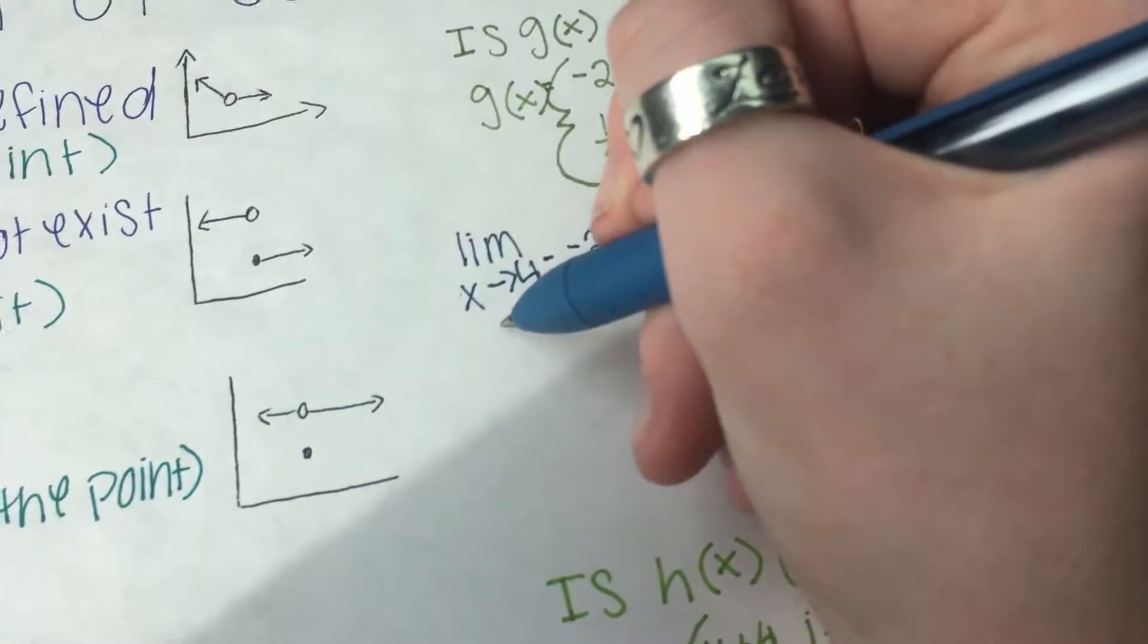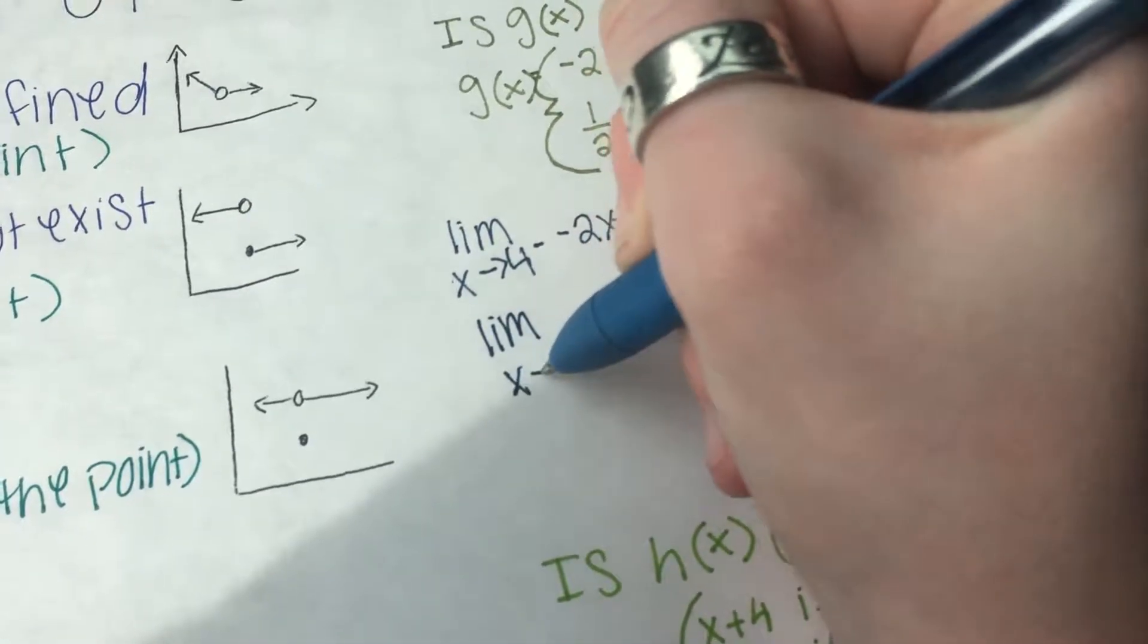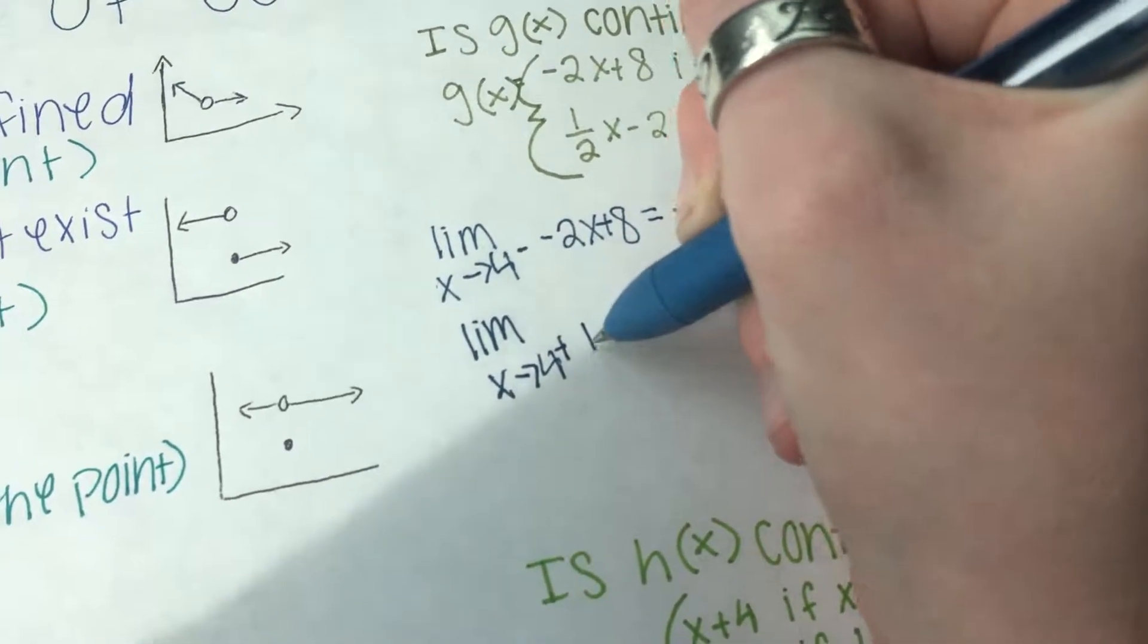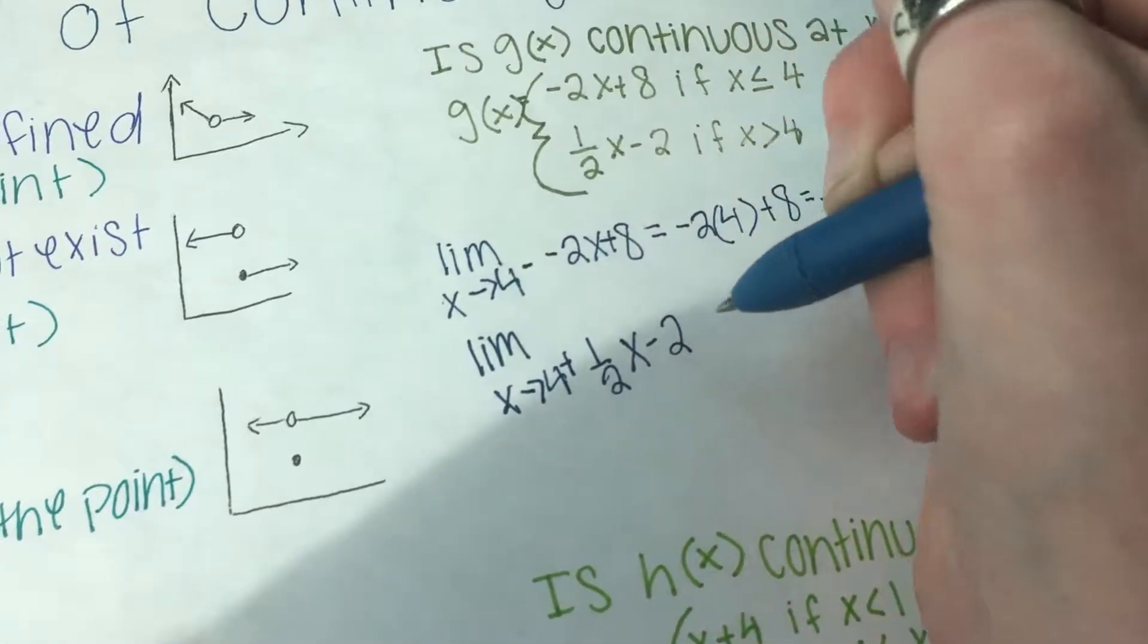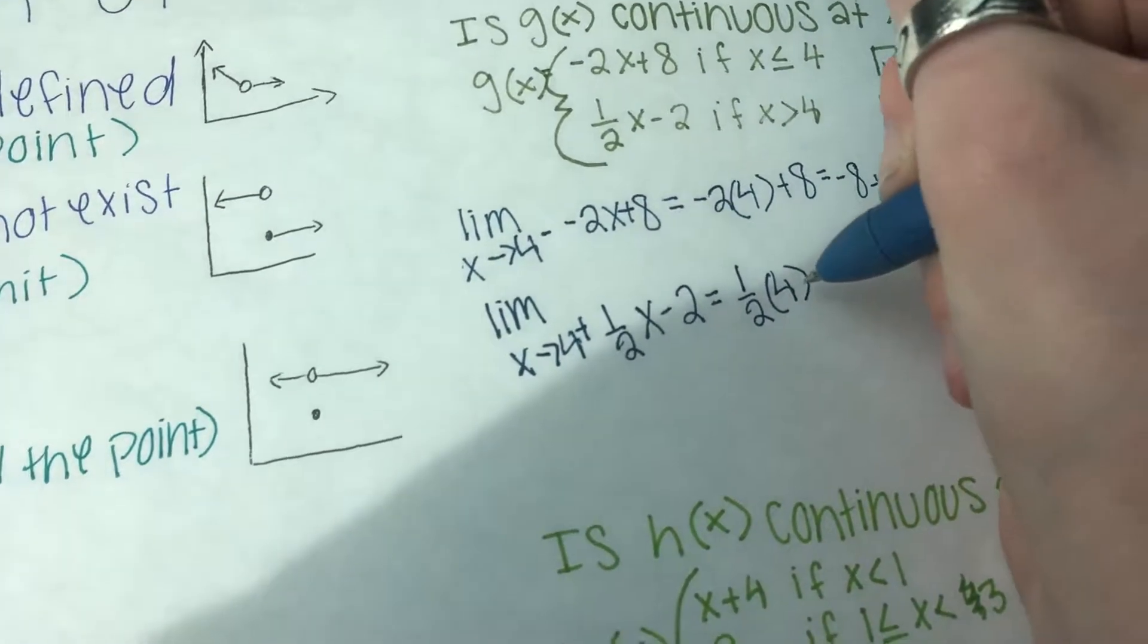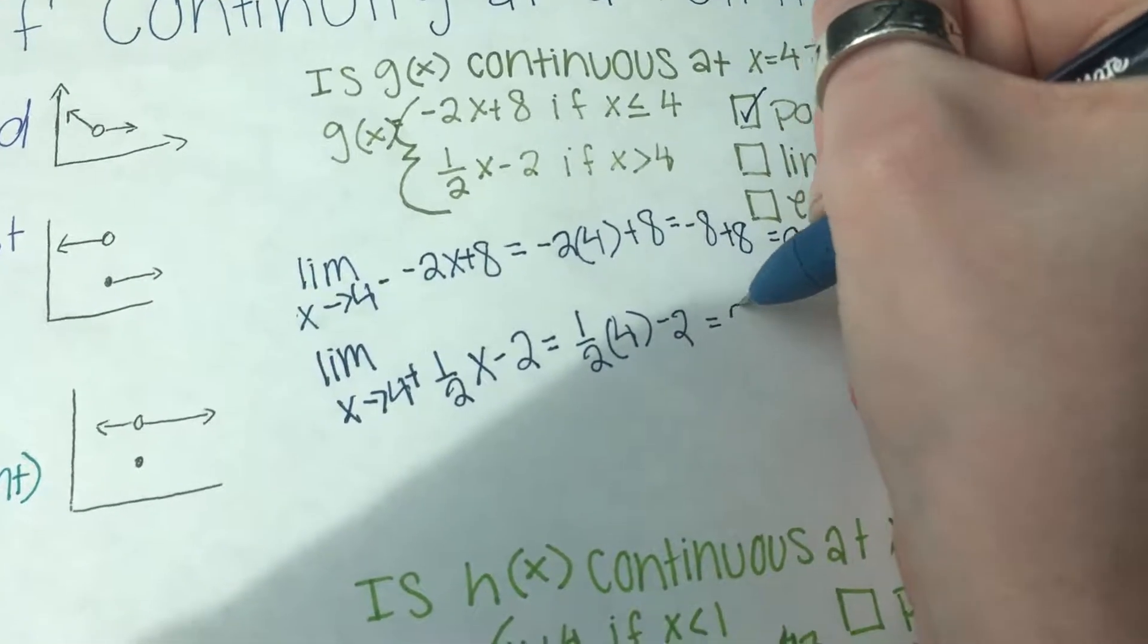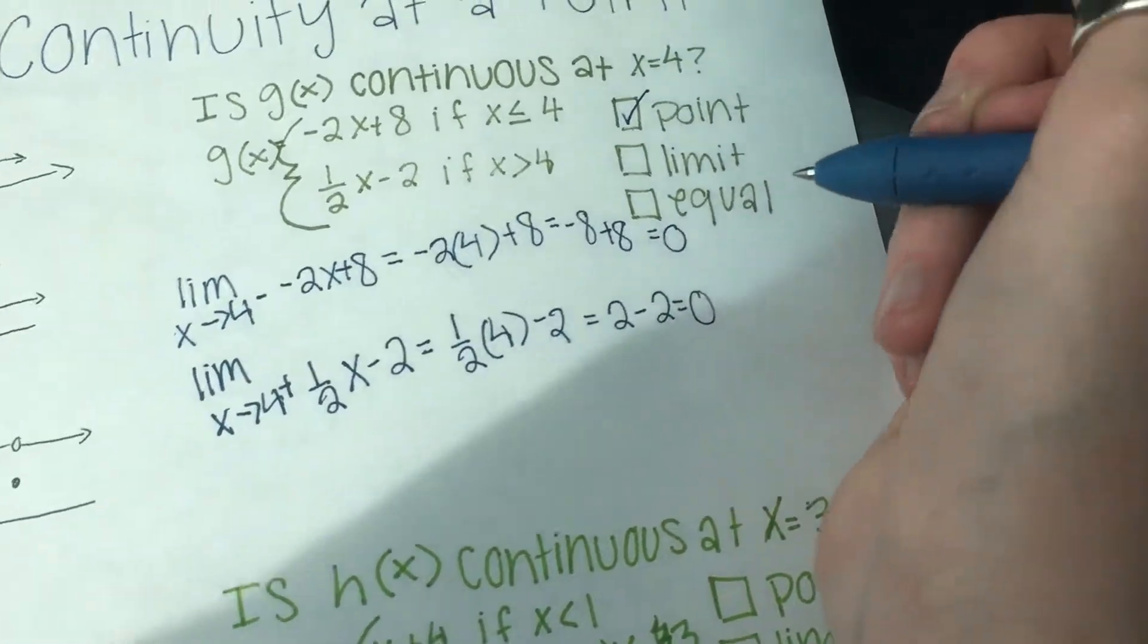So then we go to check to see if the limit is the same. So then we have the limit as x approaches 4 from the right is half x minus 2. And so then we can just plug in 4, so we have 4 times half minus 2.